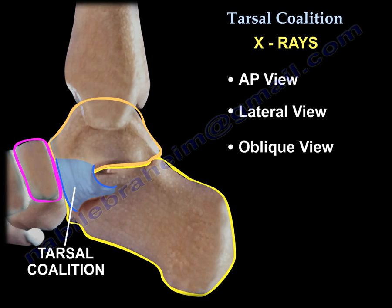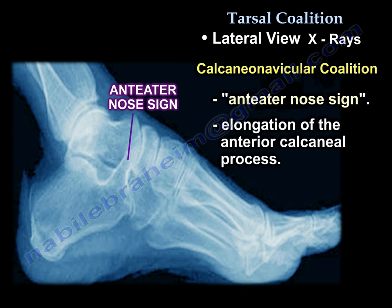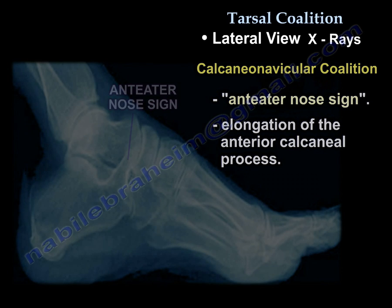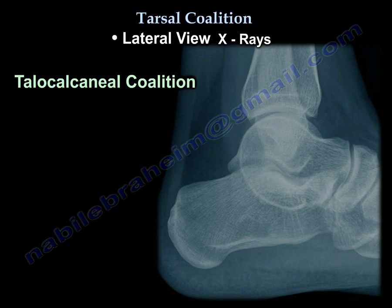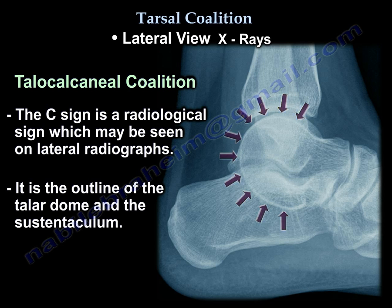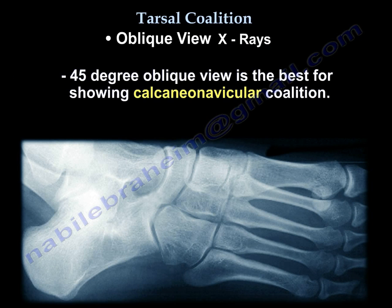AP, lateral and oblique x-ray views should be obtained. On lateral view, the calcaneonavicular coalition will show the characteristic anteater sign, which is elongation of the anterior calcaneal process. A lateral view of a talocalcaneal coalition may show talar beaking, which is a type of traction spur occurring due to limited motion in the subtalar joint. Additionally, the C-sign may be seen, which represents the outline of the talar dome and the sustentaculum. A 45-degree oblique view is considered the best view to detect a calcaneonavicular coalition.